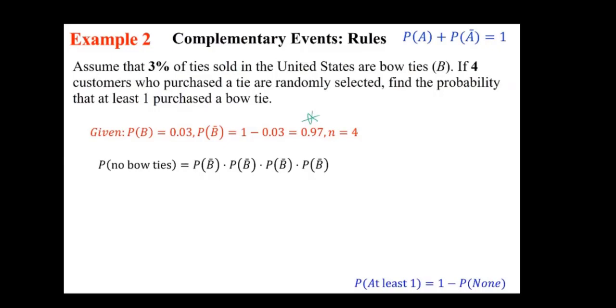Because there are four of them. Let's say there are 10 of them, to the power of 10. I wrote out for you that it means probability of B' times the next one and the next one and the next one. But an easy way would be to write down as 0.97 to the power of 4, and that means the probability of no bow ties.